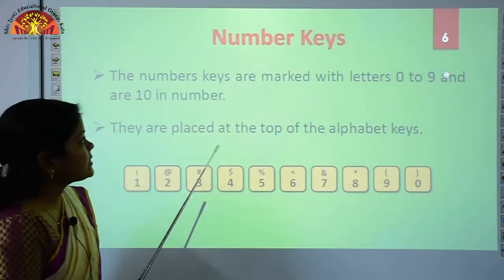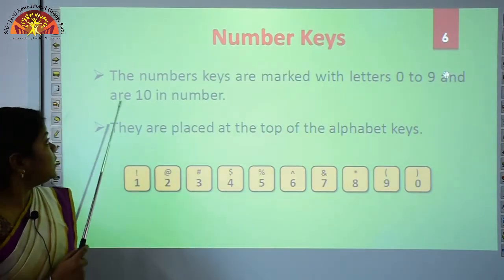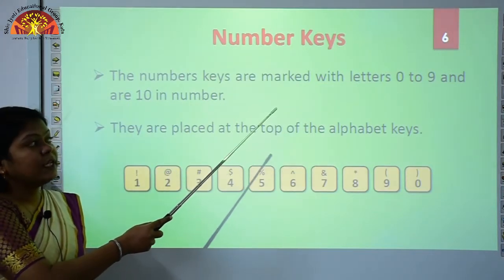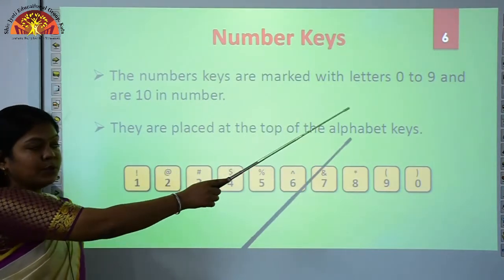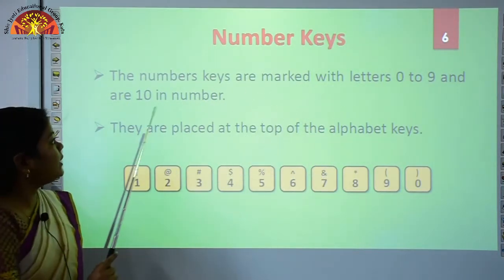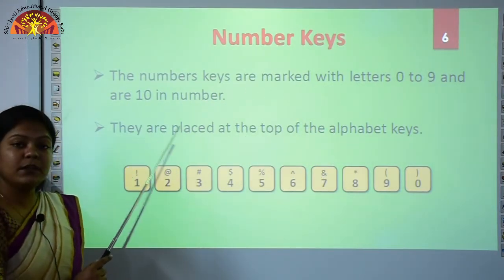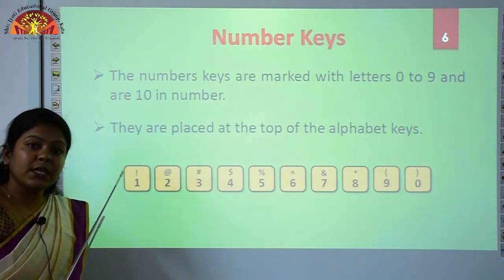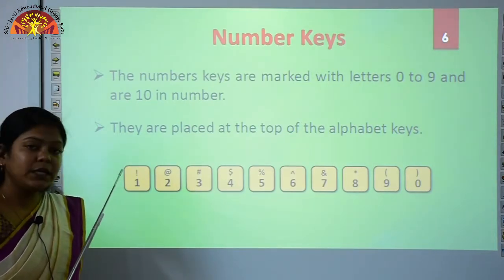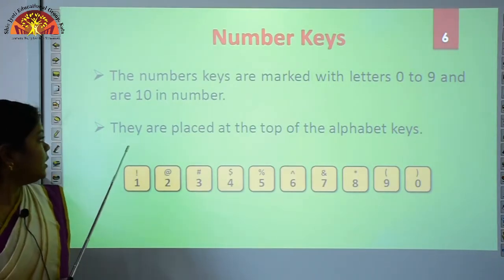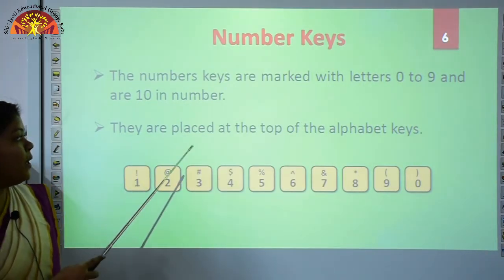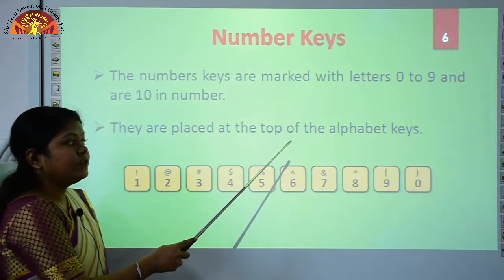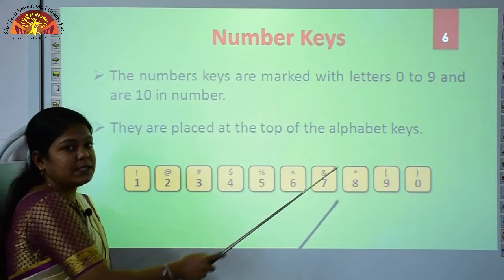Next, we have number keys. The number keys are marked with digits 0 to 9 and are 10 in number. So we have a total of 10 number keys on our keyboard. They are placed at the top of the alphabet keys.